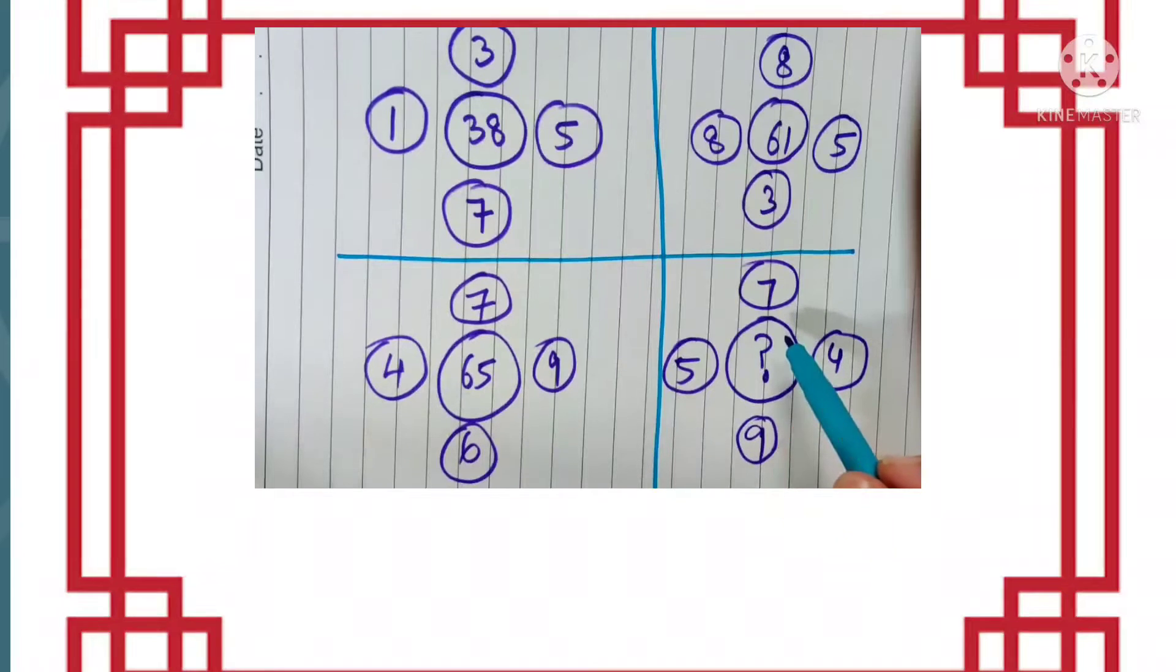The central number is formed by the combination of the numbers which are given in the outer part. So these are the four numbers. Observe the pattern around the central number.